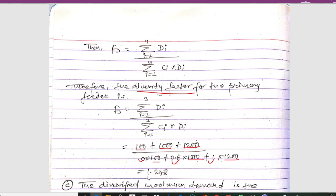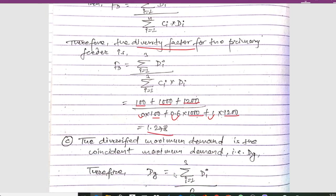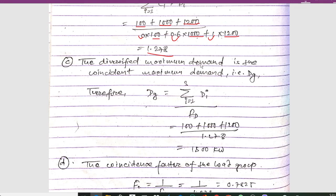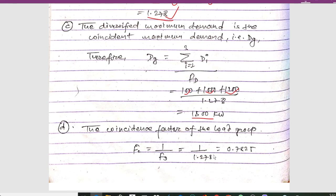We get the diversity factor Fd as 1.278. The diversified maximum demand, which is the coincidence maximum demand Dg, equals summation Di upon Fd, for i equal to 1 to 3. With Di values of 100 for street lighting, 1,000 for residential, and 2,100 for commercial, dividing by Fd of 1.278 gives us 1,800 kilowatt.